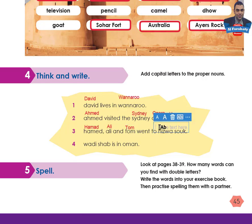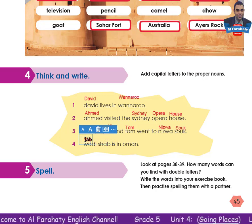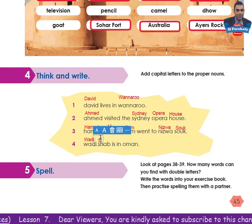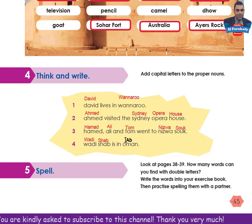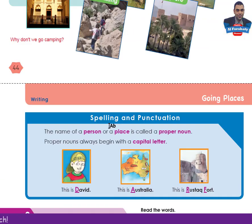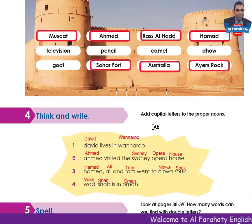Number 2 also has Nizwa — I have to put a capital N here, because it is a proper noun, and a capital S for Souk. Number 4: Wadi Shaab is in Oman — capital W for Wadi, capital S for Shaab, as it is a proper noun. Capital O for Oman. Note: the word 'souk' can be written with a K or with a Q, like here, because it is an Arabic word. The English word is 'market.'